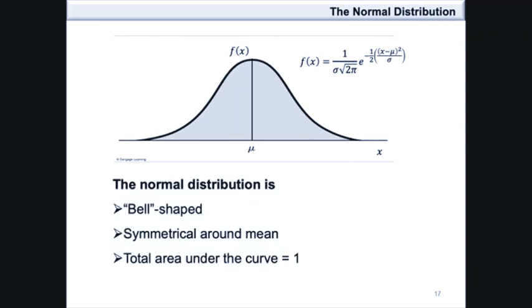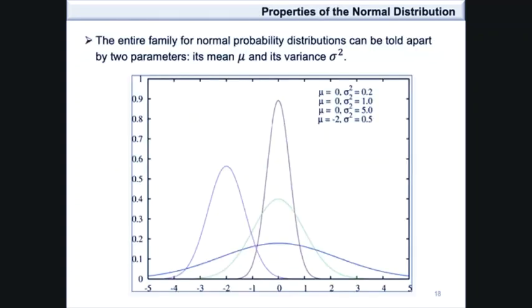It is bell-shaped, symmetrical around the mean, and the total area under the curve is equal to 1. The entire family for normal probability distributions can be told apart by two parameters, its mean μ and its variance σ². The following figure gives examples of the different probability density curves that can be obtained from the family of normal distributions.